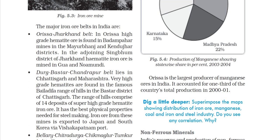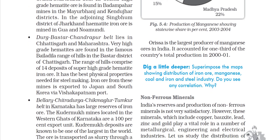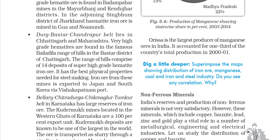The second belt is the Durg–Bastar–Chandrapur belt in Chhattisgarh. The famous Bailadila range of hills in the Bastar district of Chhattisgarh is compressed into 14 deposits of super high-grade hematite iron ore with the best physical properties needed for steel making. Iron ore from these mines is exported to Japan and South Korea via Visakhapatnam port.